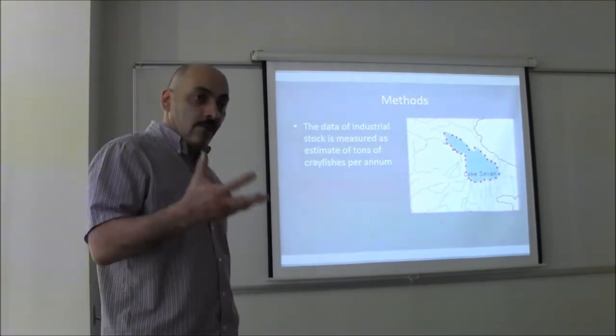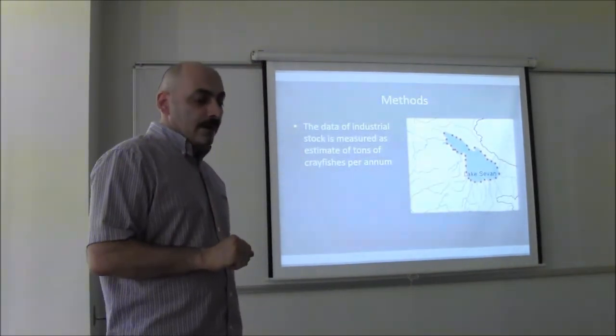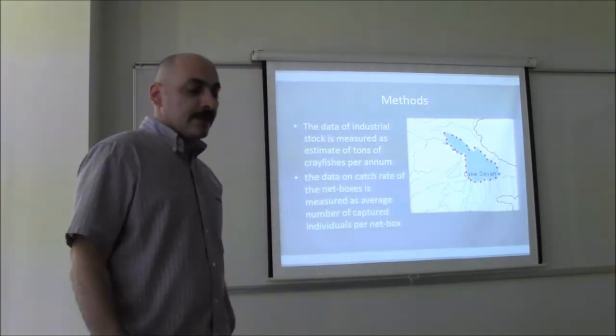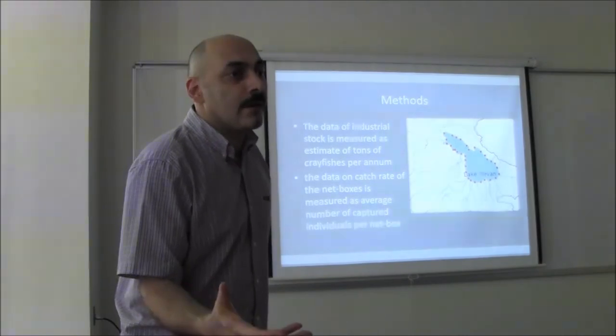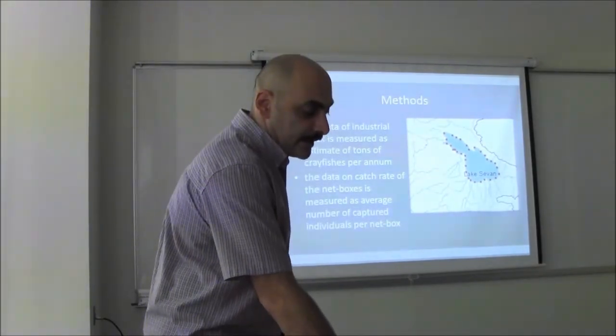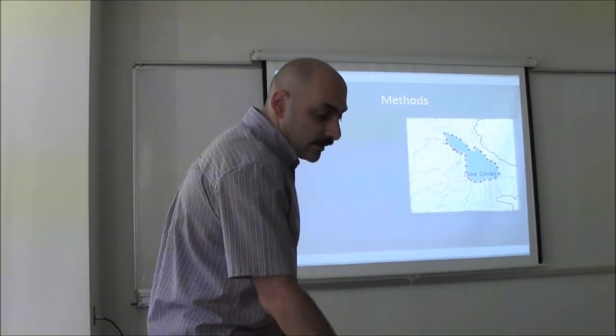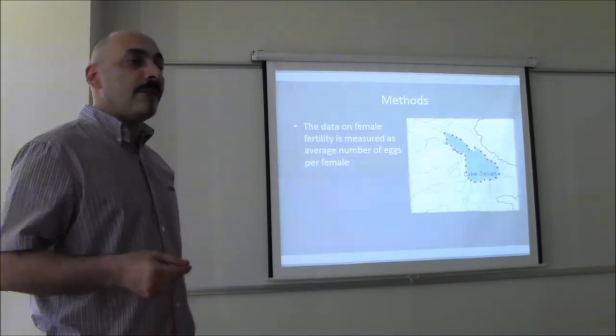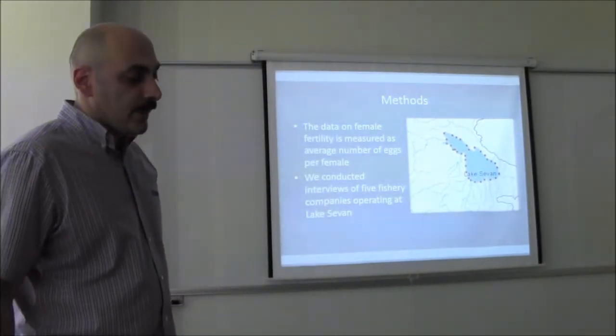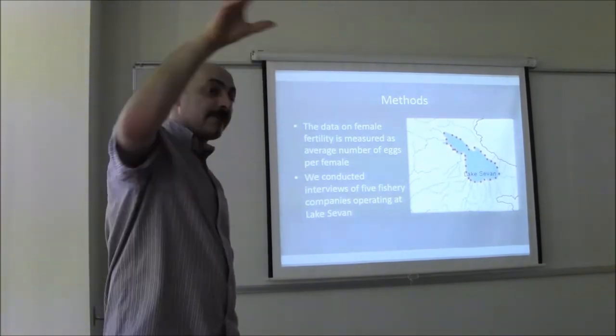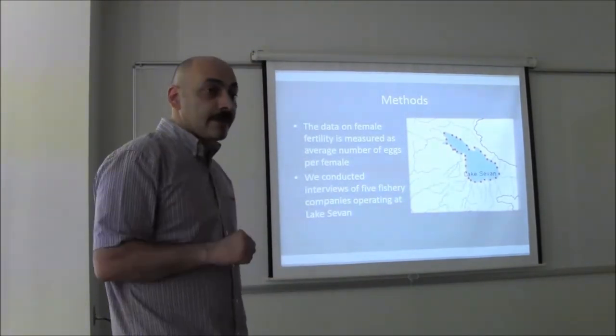So the data of industrial stock, like how many crayfishes of industrial size occur in the lake, it was estimated in tons per annum. And also the data on catch rate, like how many crayfishes have been caught by one trap. It has been calculated as average of captured individuals per trap, per netbox. Also we have collected data on female fertility, like how many eggs females produce, and it is measured as a number of eggs per female. In addition, we conducted interviews of several fisheries in surroundings of Lake Sevan which are mainly capturing the crayfishes from the lake.